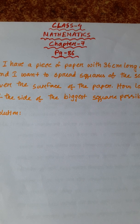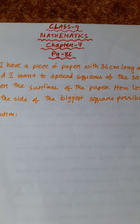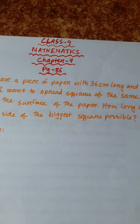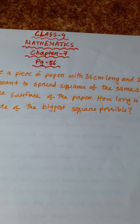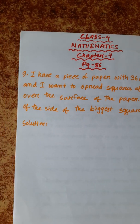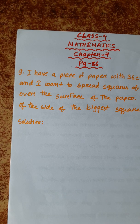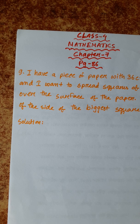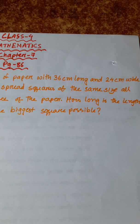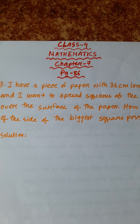Next, number 9: I have a piece of paper 36 centimeters long and 24 centimeters wide. I want to spread squares of the same size all over the surface of the paper. How long is the length of the side of the biggest square possible?